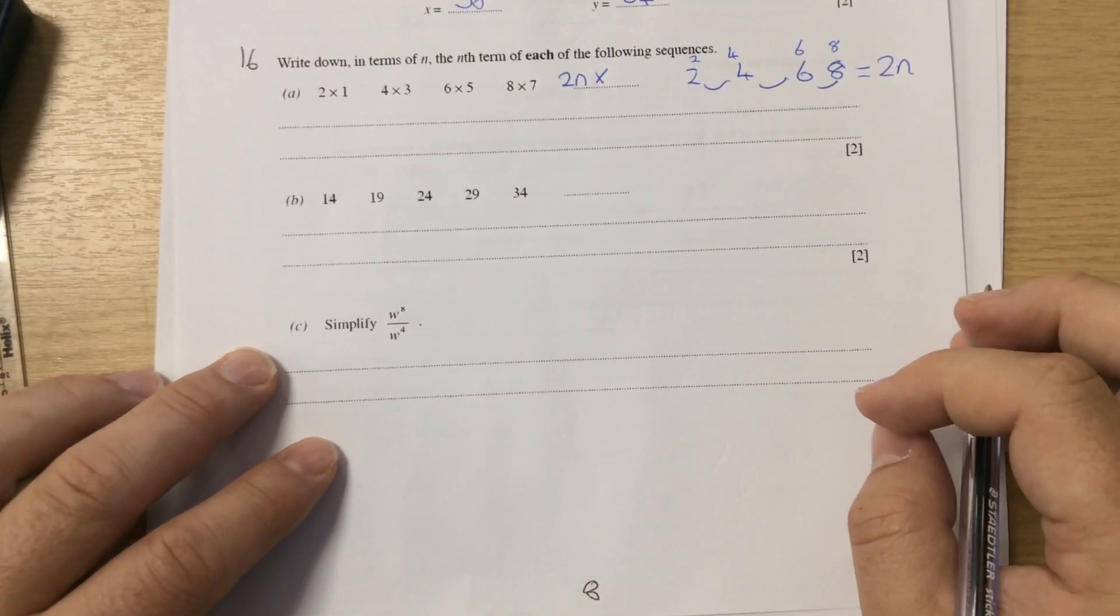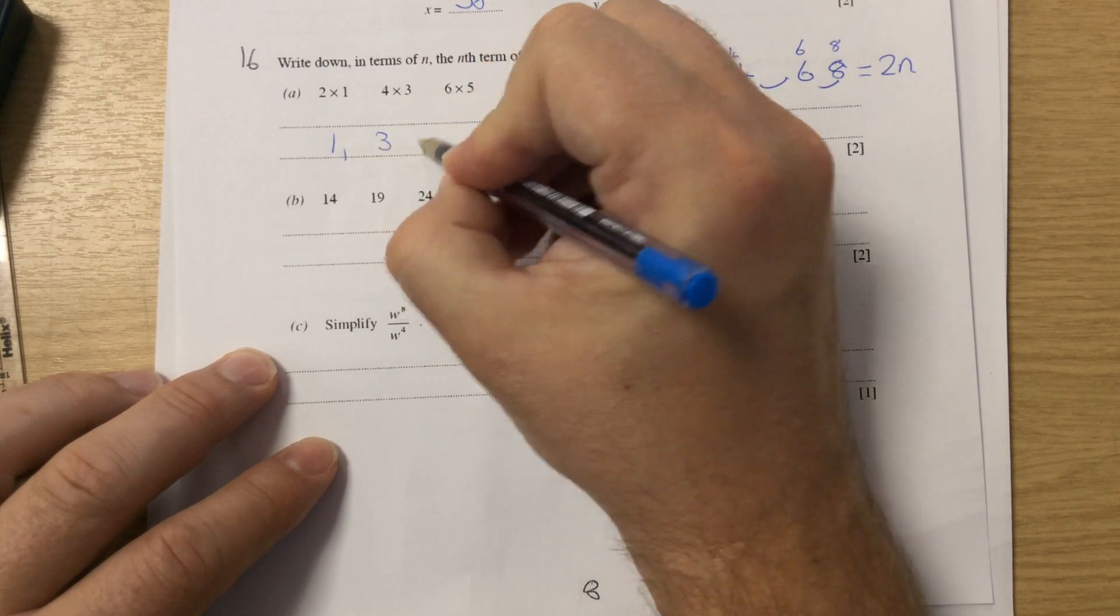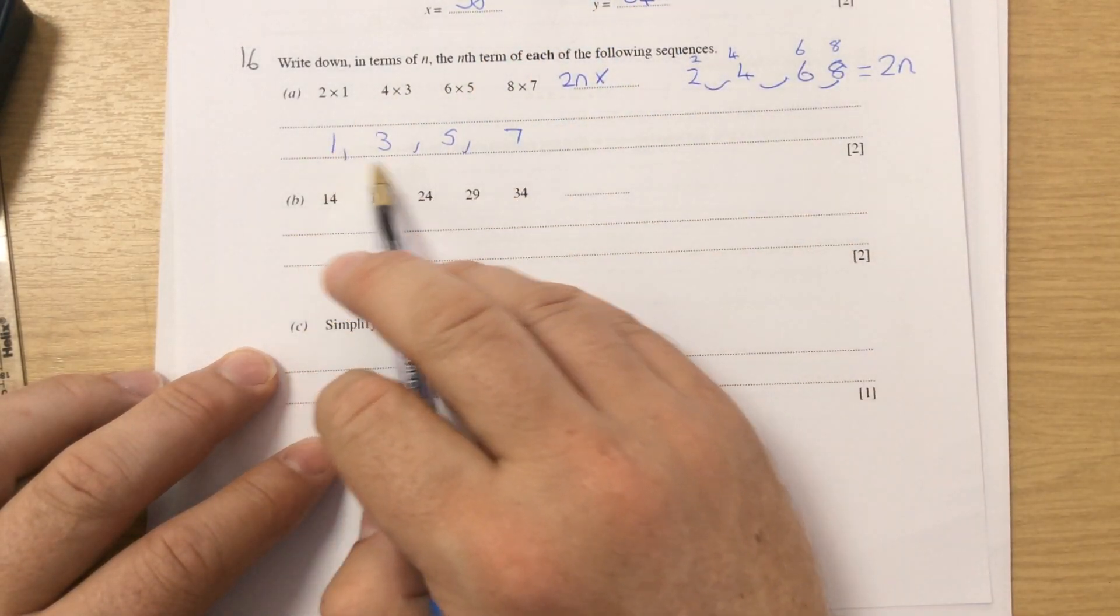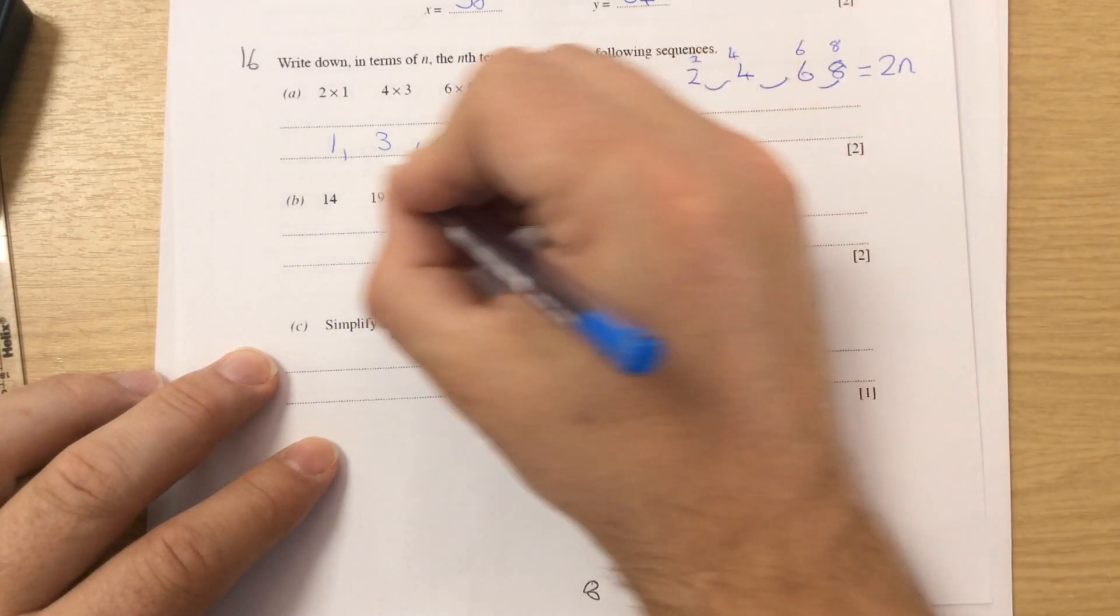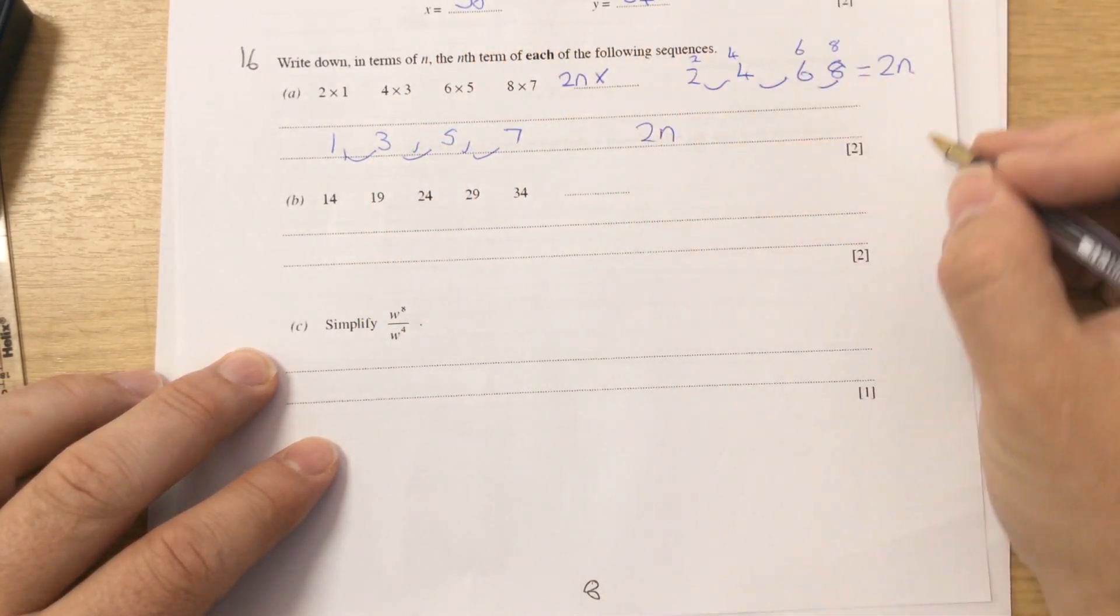And then that's multiplied by your second sequence is 1, 3, 5, 7. This is also going up in twos. So because it's going up in twos, you're adding two on each time. That one is also 2n.